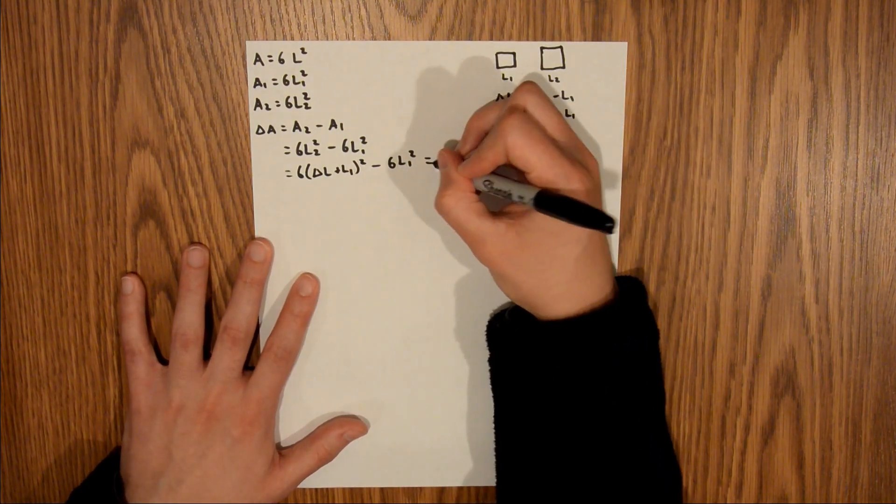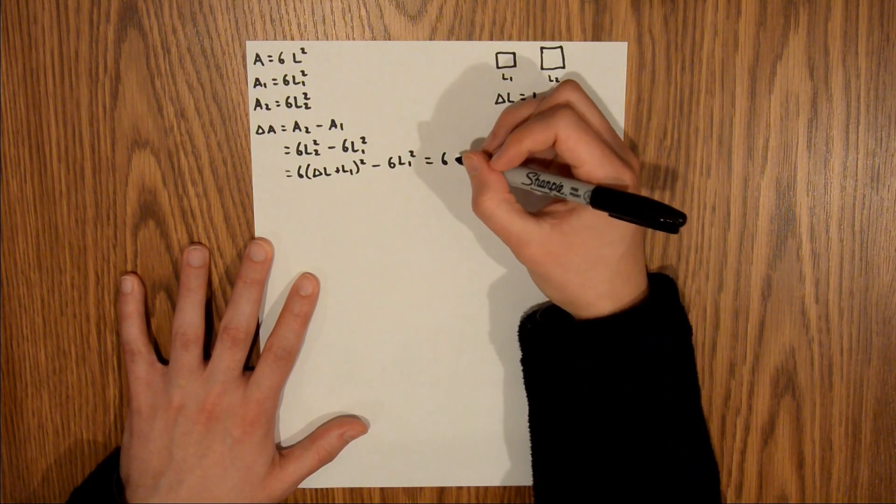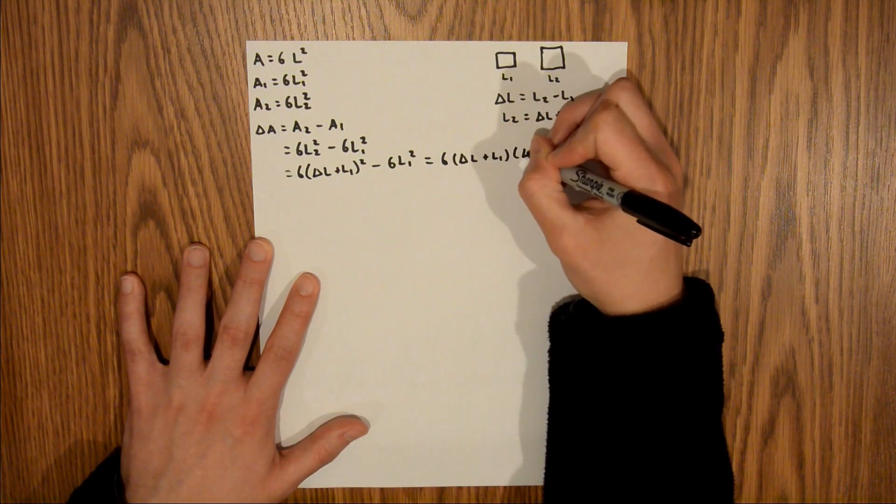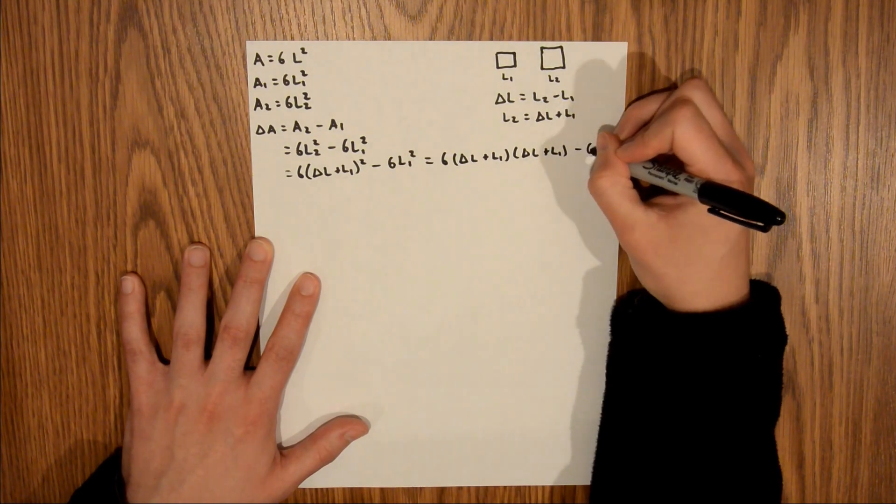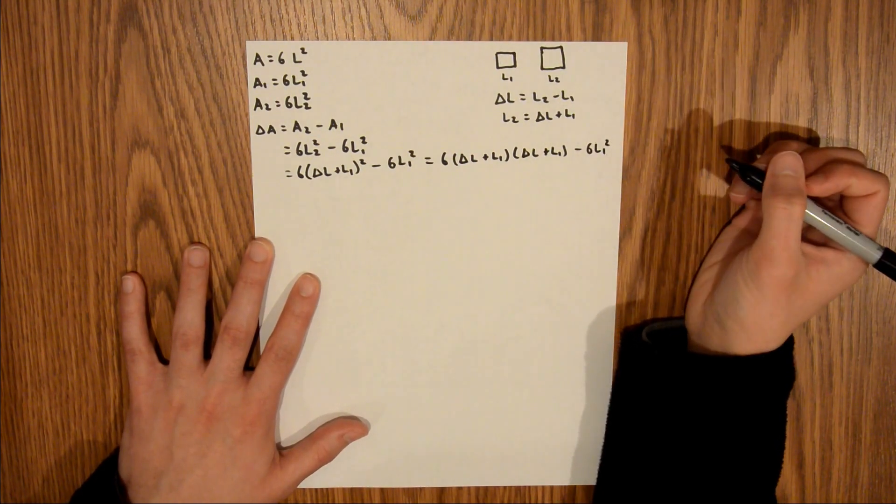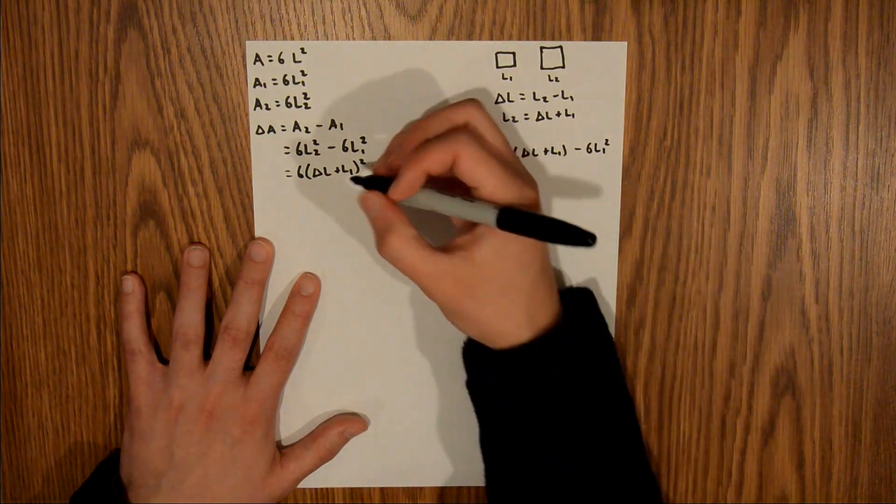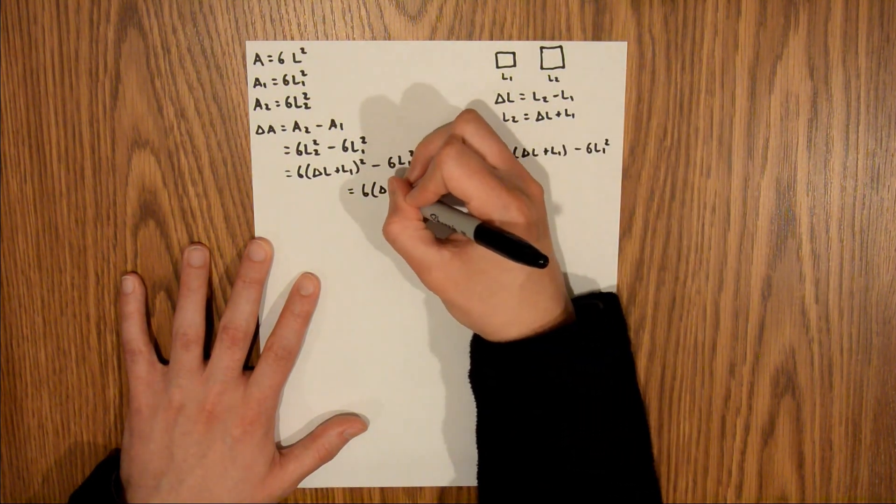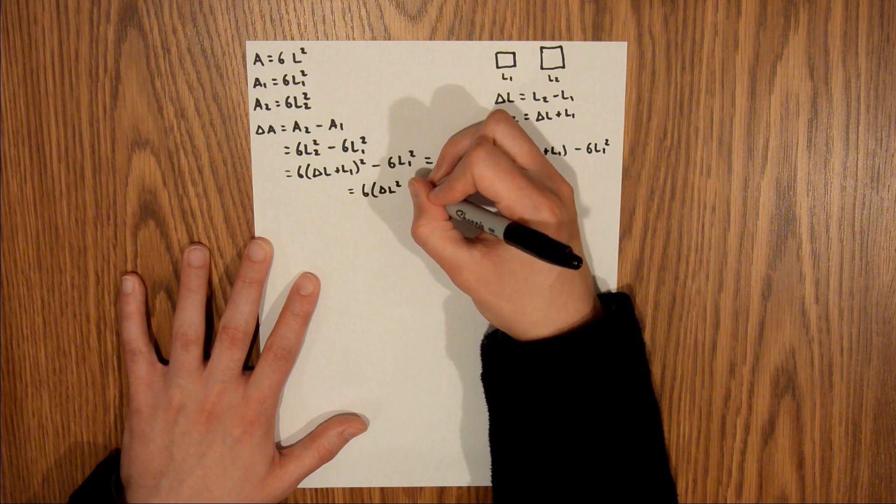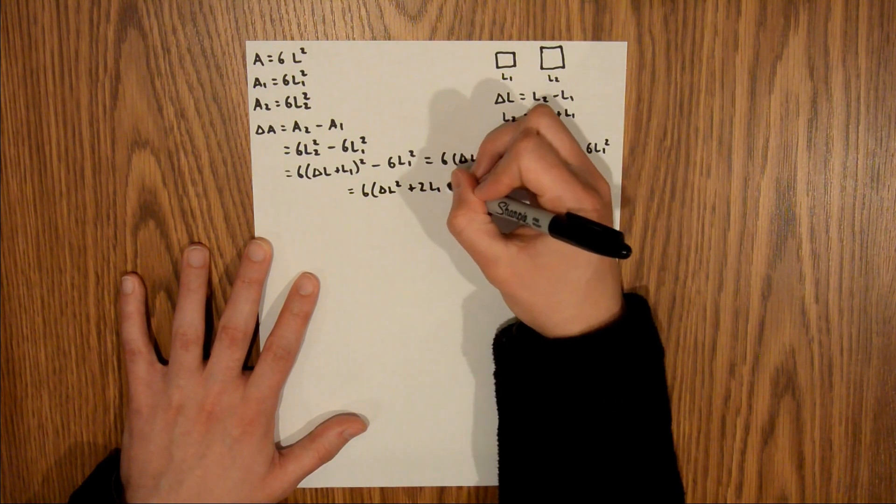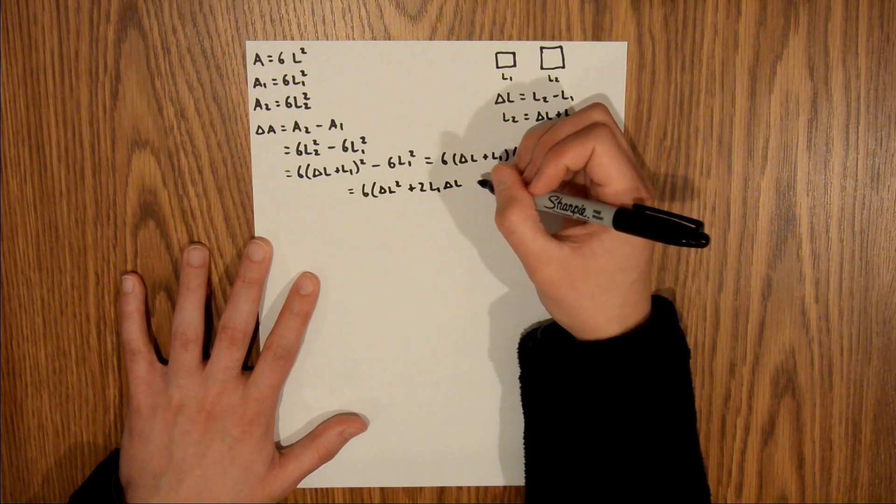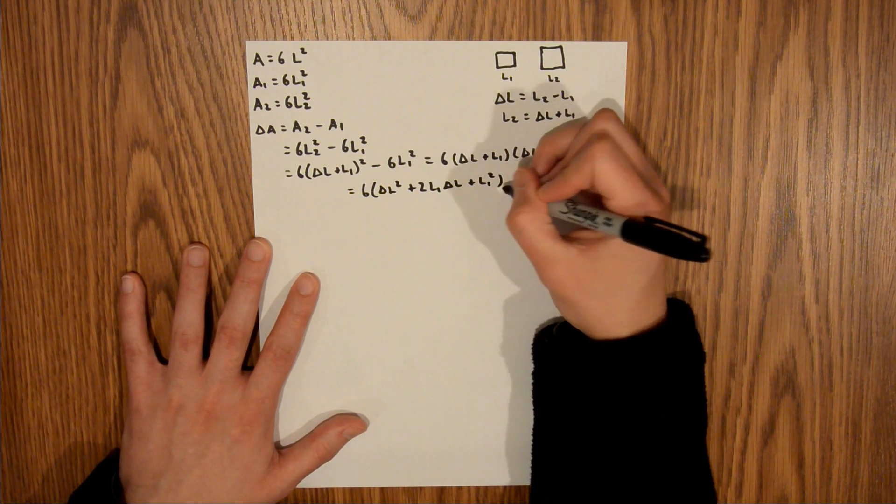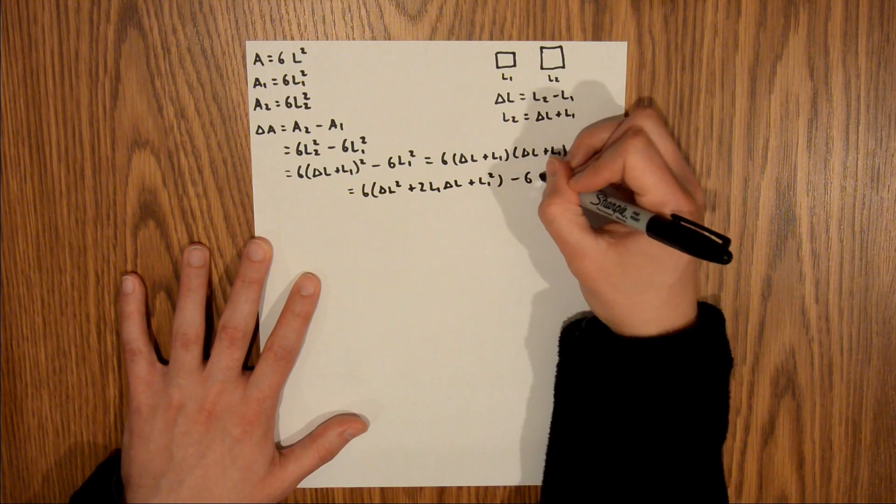And now I can expand this out a little bit. That's going to be six delta L plus L1, delta L plus L1, minus six L1 squared. And now I'm going to multiply these two out. So that's going to be six times delta L squared, plus two L1 delta L, plus L1 squared minus six L1 squared.